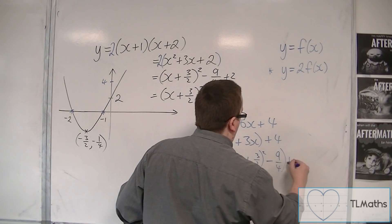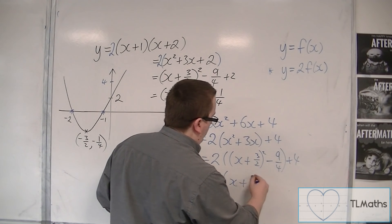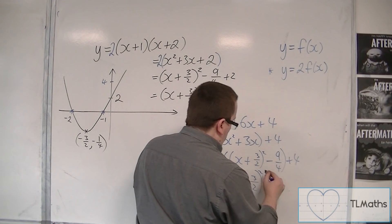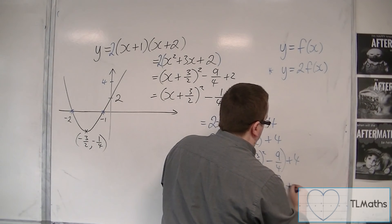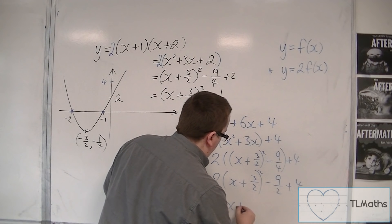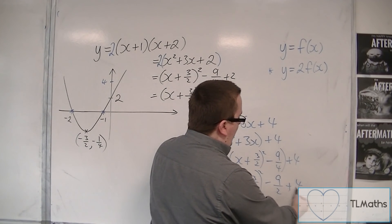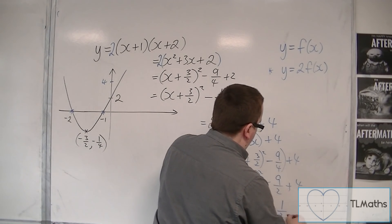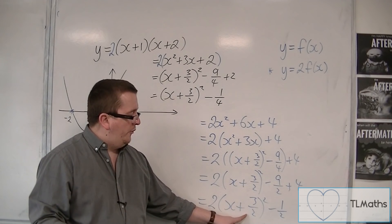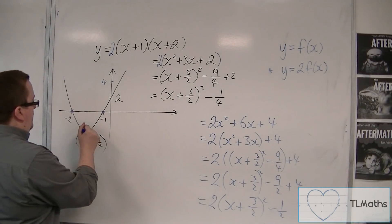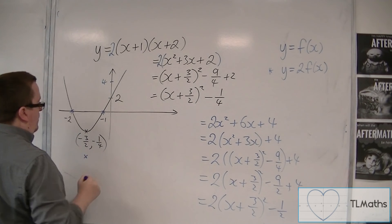So that's 2 lots of (x plus 3 halves) squared, which is 8 halves, so minus 1 half. So this has a vertex at minus 3 halves, minus 1 half. So minus 3 halves, minus 1 half is actually down there.